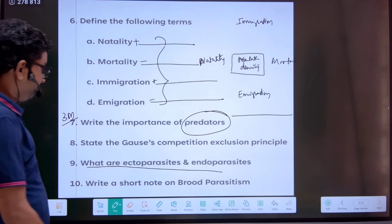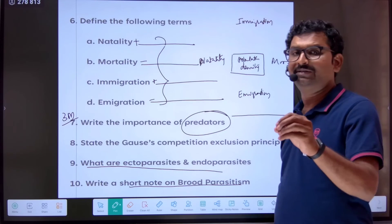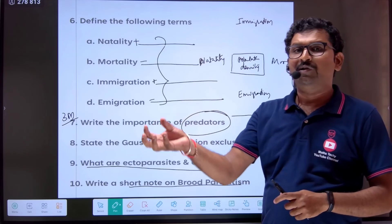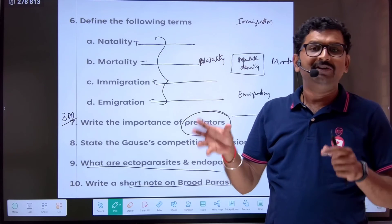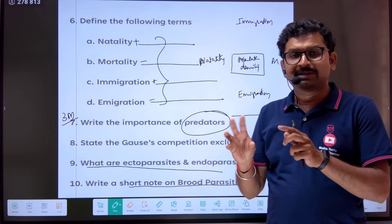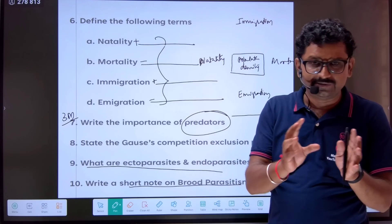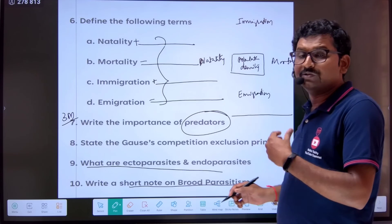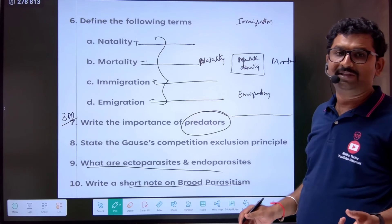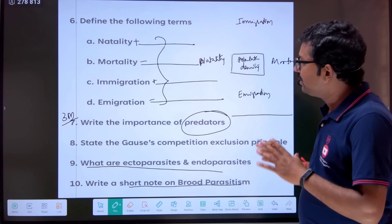The last question is brood parasitism. What is brood parasitism? A parasitic bird — the common example is the cuckoo and crow — lays its egg in the host nest and allows the host organism to incubate its egg. The host cannot identify the parasitic bird's egg because it resembles the host's own eggs. The best example is the cuckoo and crow.